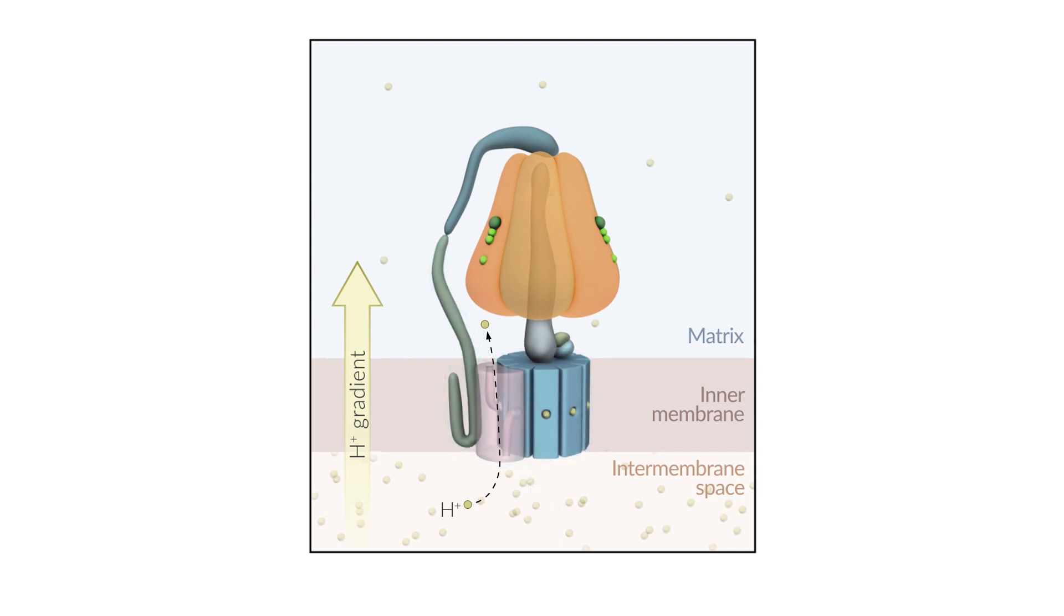Protons flow through the channel along their gradient, from the intramembranous space back into the matrix. The proton gradient is degraded, thereby releasing the energy stored.